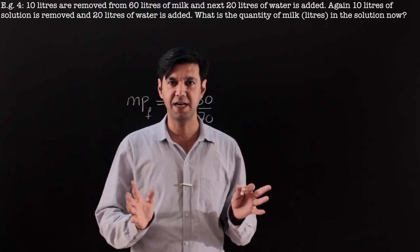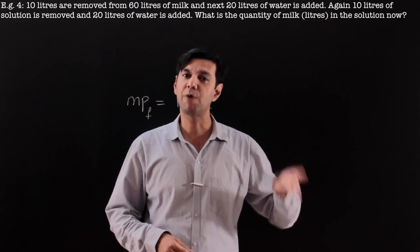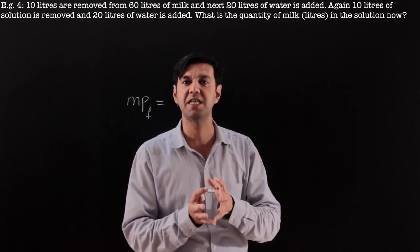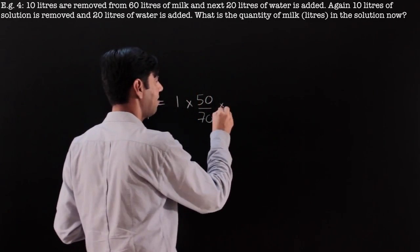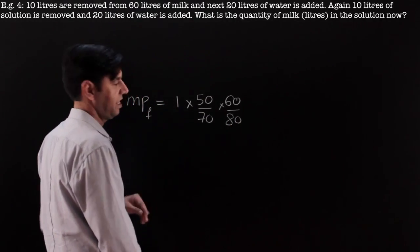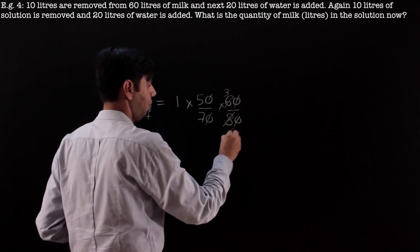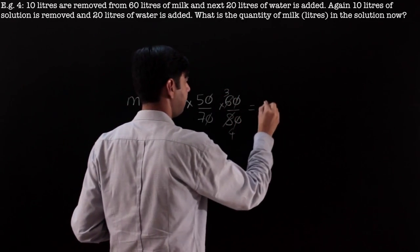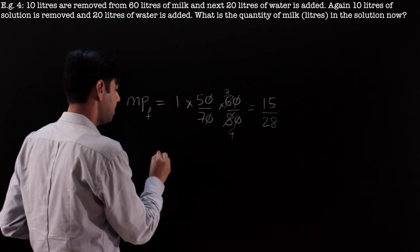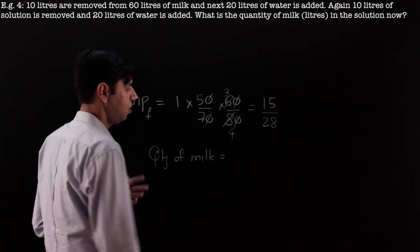Now we have 70 liters. From 70 I again remove 10 liters of solution — removing does not affect the milk proportion, but 70 has become 60. Now I add 20 liters of water, so the volume increases from 60 to 80. The second factor is 60/80, giving the proportion of milk at the end.